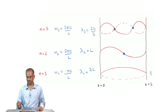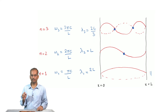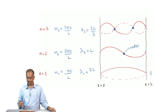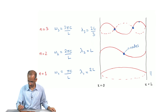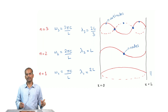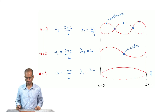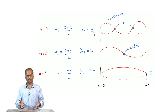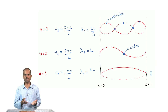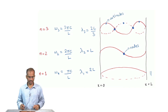For n = 1 there are no zero-crossings within the string; for n = 2 there is one zero-crossing; and for n = 3 there are two. These zero-crossing points are called nodes, and the points of maximum amplitude are called antinodes. There is a clear relationship between n and the number of nodes in a given mode. In all cases, y = 0 at x = 0 and x = l, precisely respecting the boundary conditions.